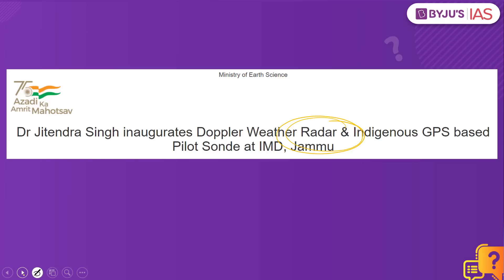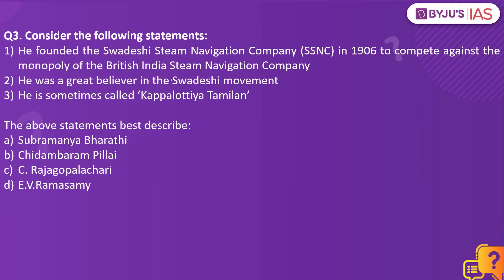Now let's look into the next practice question. Consider the following statements: He founded the Swadeshi Steam Navigation Company in 1906 to compete against the monopoly of the British India Steam Navigation Company. He was a great believer in the Swadeshi movement and is sometimes called Kapalothiya Tamilian. The above statements best describe Chidambaram Pillai.